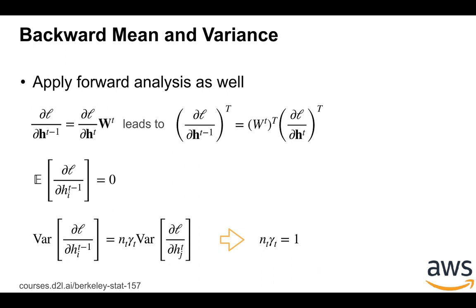Similarly for the backward pass: by the chain rule, the gradient of L with respect to h_{t-1} equals the gradient of L with respect to the output of the t-th layer times W_t. Transposing both sides gives a very similar form to the forward path. By the same assumptions the expectation is zero, and the variance of the gradient of the input of the t-th layer equals n_t times γ_t times the variance of the output gradient. To ensure gradients have similar variance, we get n_t · γ_t = 1. This is the second constraint.